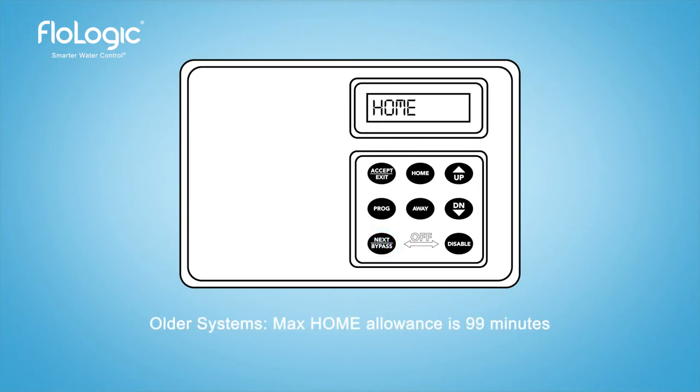The home mode has a default continuous flow allowance of 30 minutes and can be adjusted up to 3 hours. When adjusting the home flow allowance, note that washing machines only use water for short intervals that are well within the default time of 30 minutes.